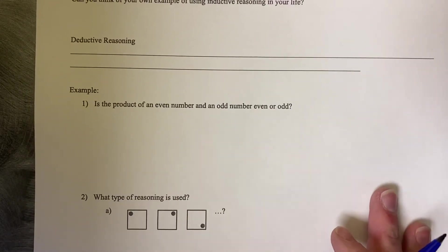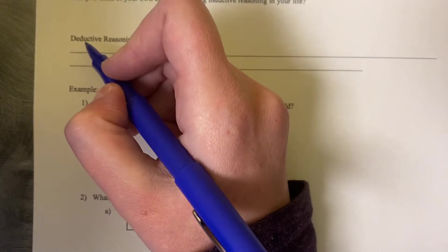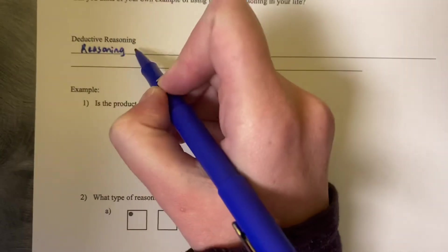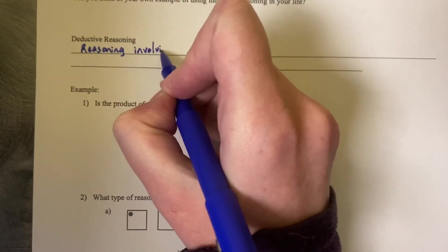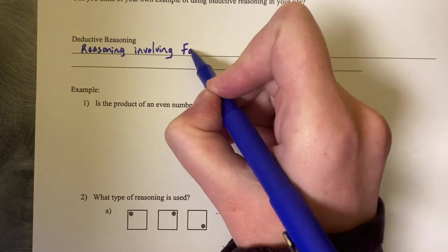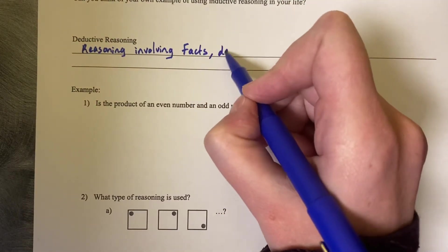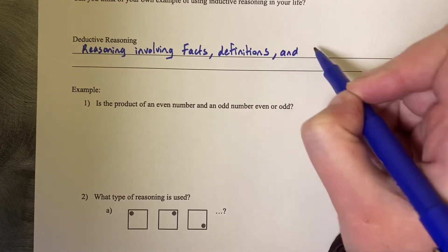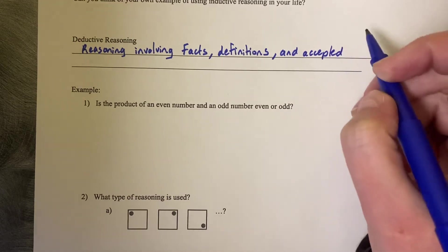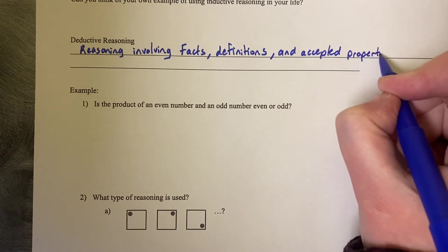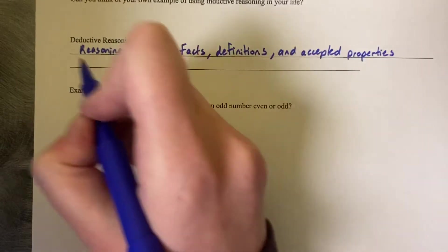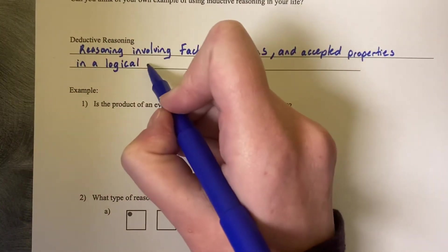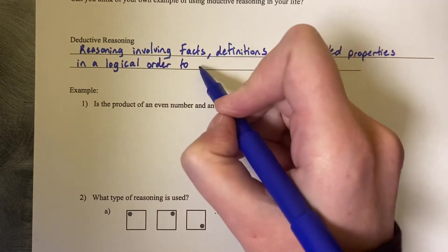Now, contrasting, what is deductive reasoning? Deductive reasoning is reasoning involving facts, definitions, and accepted properties in a logical order to reach a conclusion.